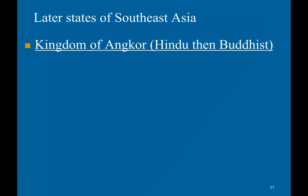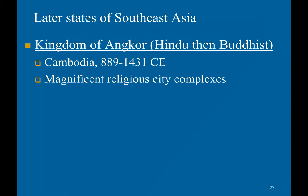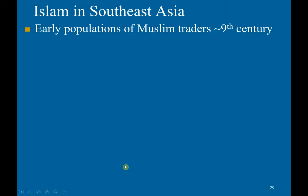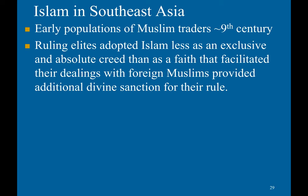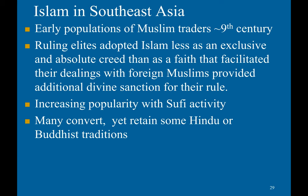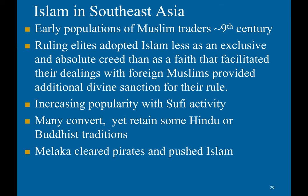Later states of Southeast Asia included the kingdom of Angkor, which started off Hindu but then became Buddhist. It was centered in Cambodia and lasted from 889 to 1431 CE, and featured magnificent religious city complexes. You also get Singhasari and Majapahit. Early Muslim populations appeared in Southeast Asia in the 9th century. The ruling elites adopted Islam less as an exclusive creed and more as a faith that facilitated dealings with foreign Muslims and provided divine sanction for their rule. It became increasingly popular with Sufi activity, and many converted while retaining some Hindu or Buddhist traditions. The Malacca civilization also helped by clearing pirates and spreading Islam.